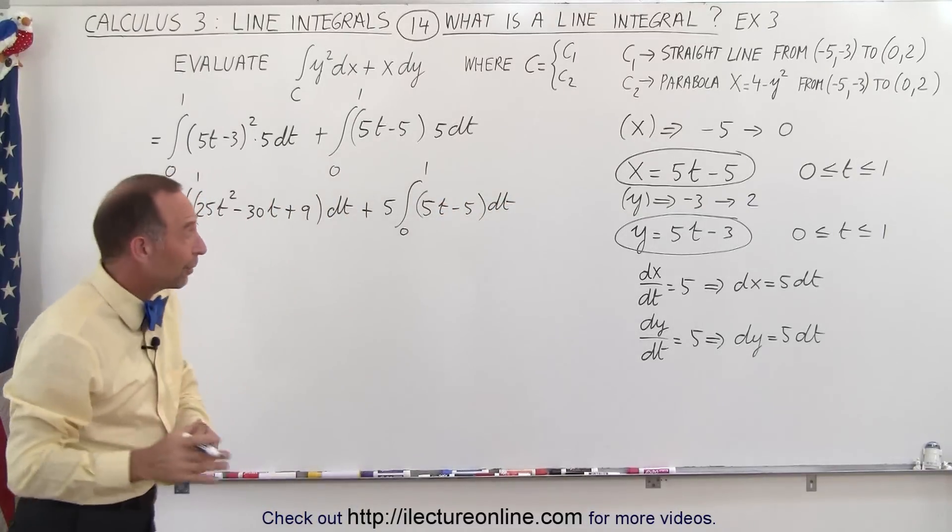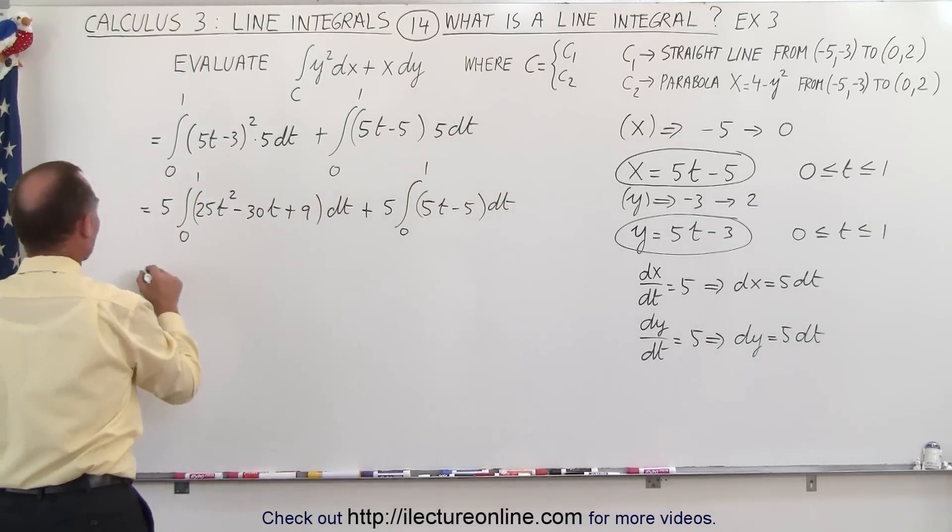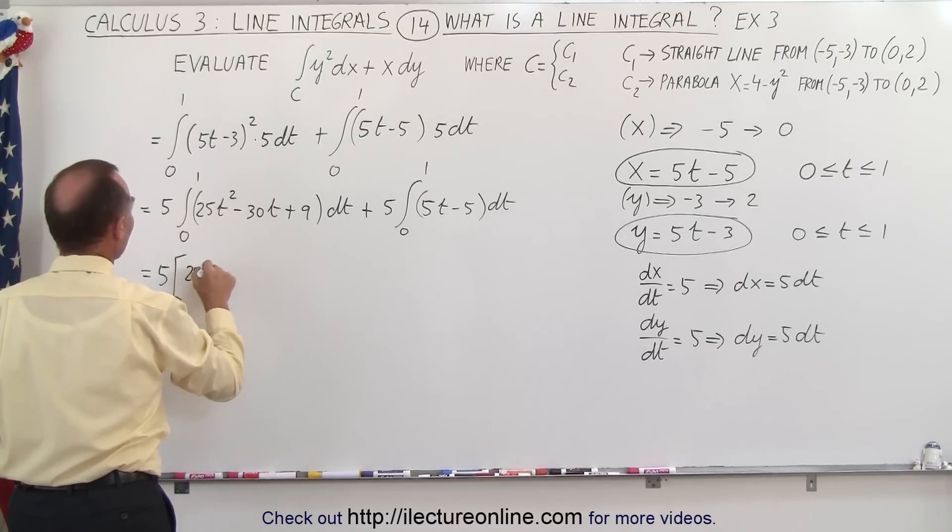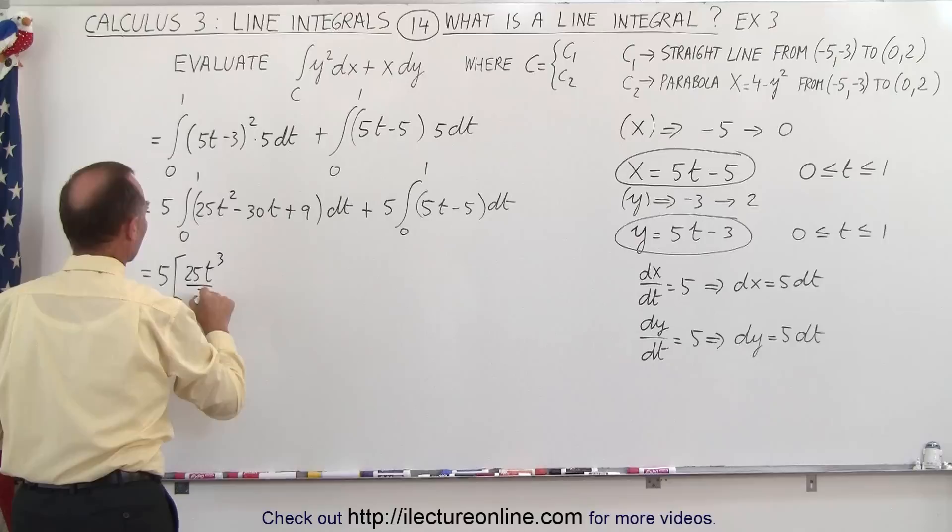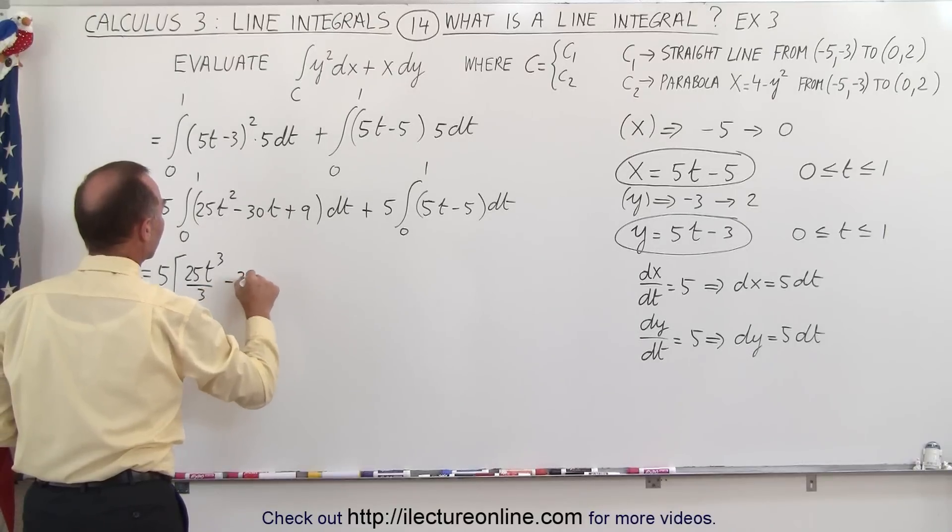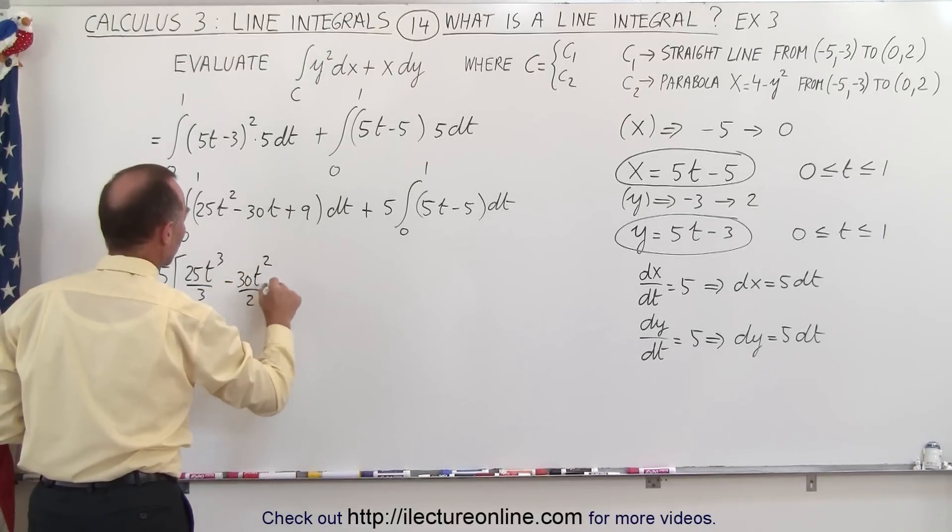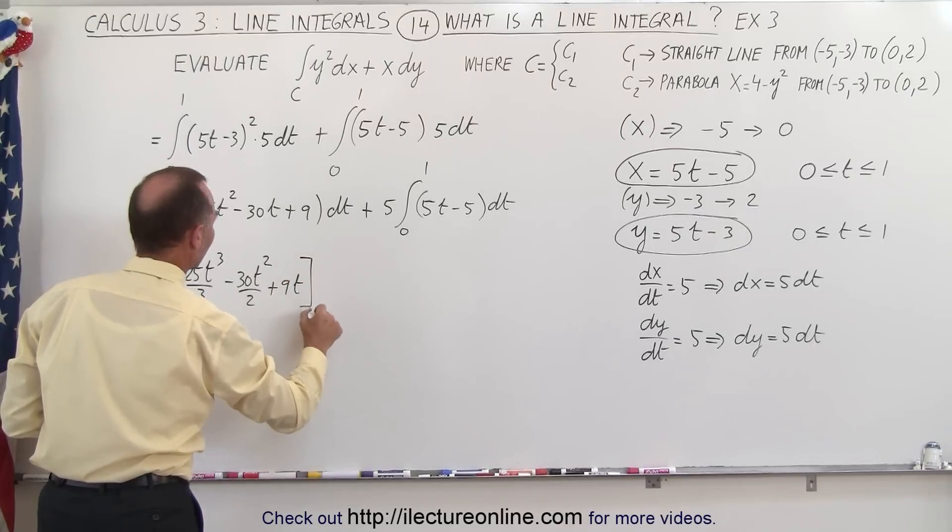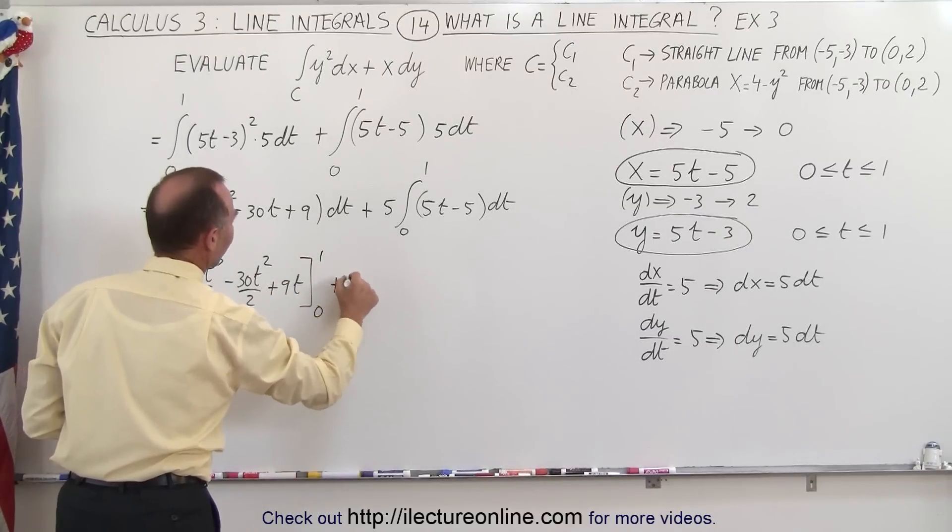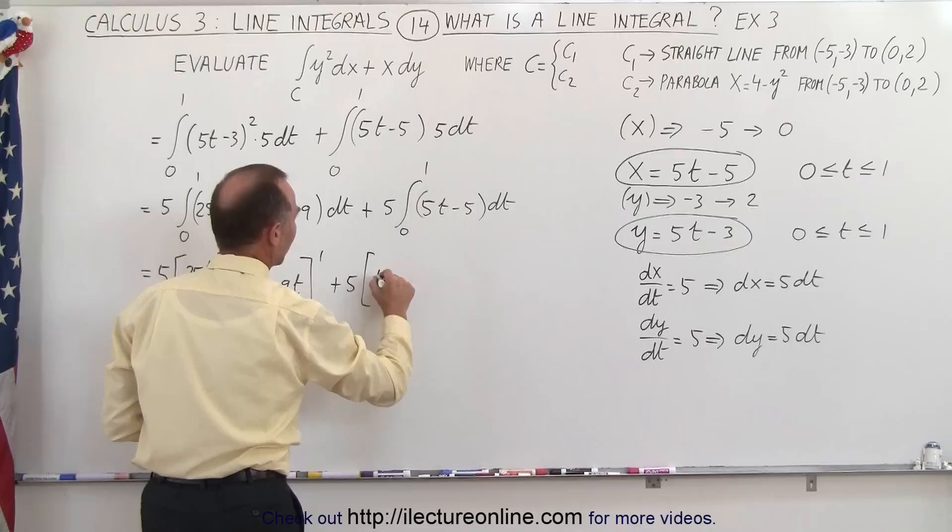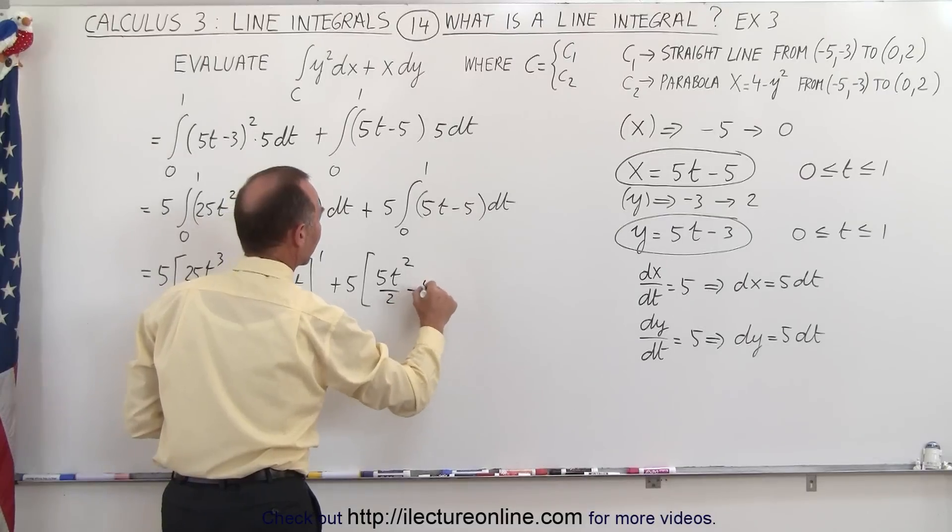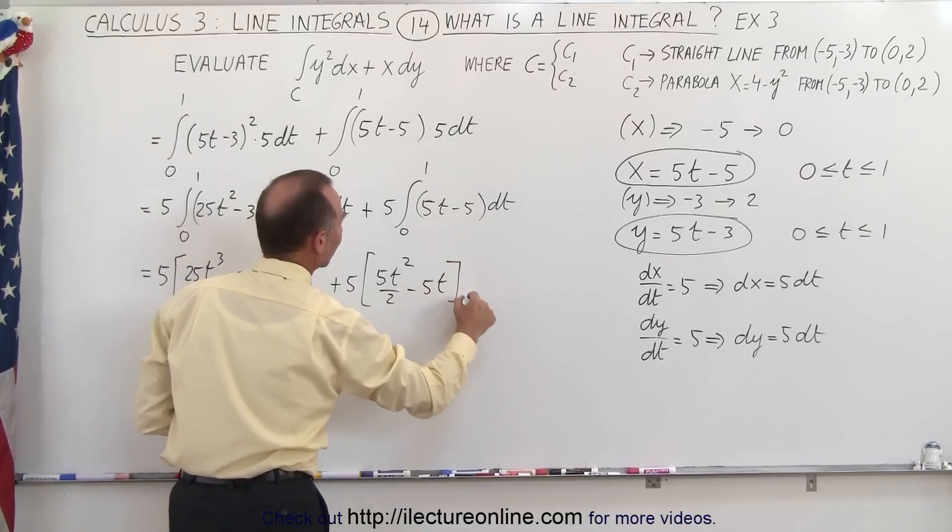And now I'm ready to go ahead and integrate that, that's relatively simple, so this is equal to 5 times, that would be 25t cubed over 3 minus 30t squared over 2 plus 9t, evaluated from 0 to 1, and then plus 5 times, that would be 5t squared over 2 minus 5t, again from 0 to 1.